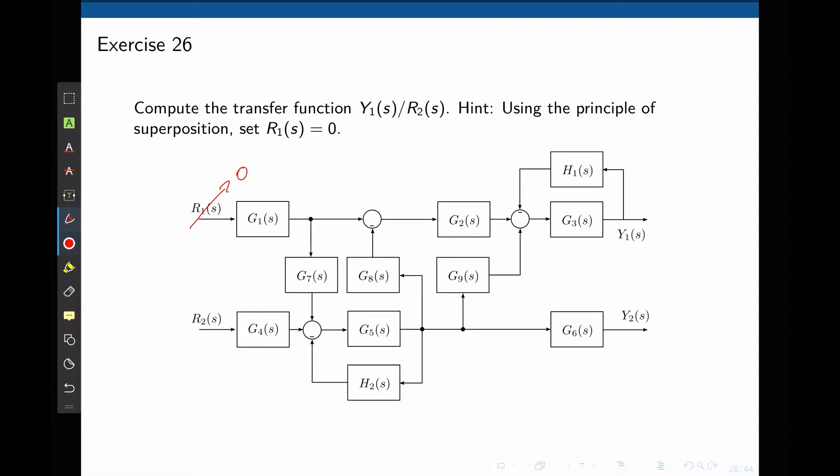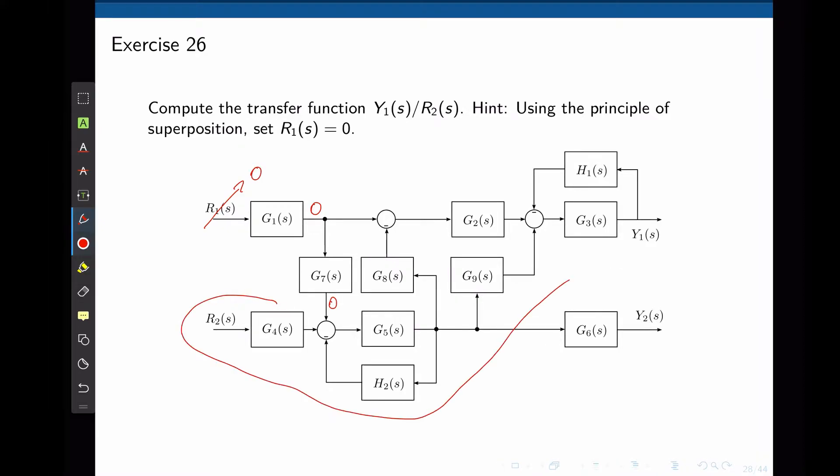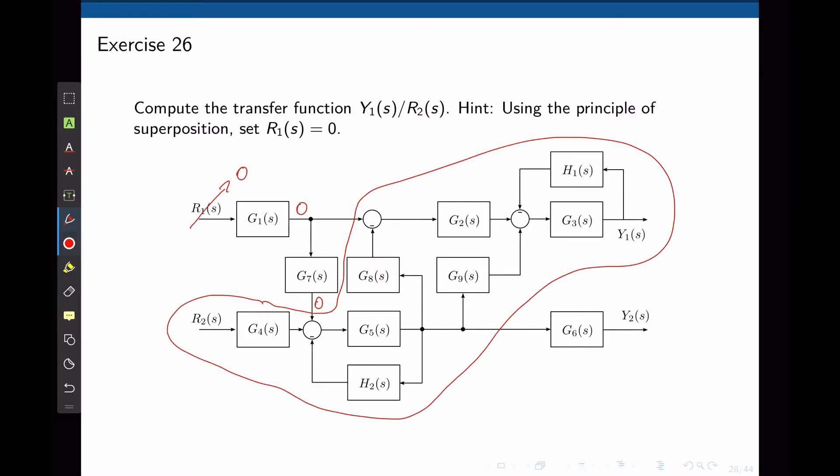By setting R1 to 0, all branches that are connected to R1 become 0. For instance, at this point we also have 0. At this point we have 0, which means that G1 and G7 now can be neglected, and we are left with all other blocks that now form the path between R2 and Y1.